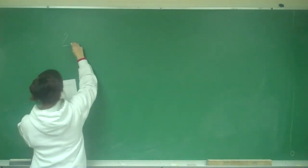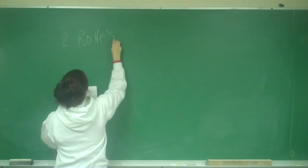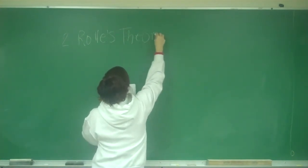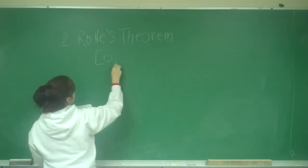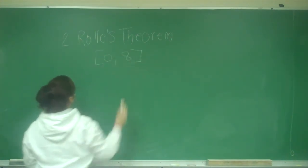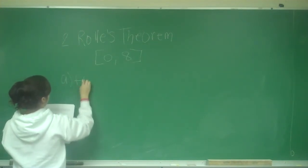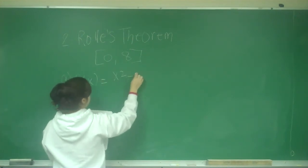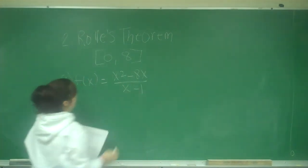So this is number 2, and it is dealing with Rolle's theorem. We're on the interval from 0 to 8. So our first one is A, which is f(x) equals x squared minus 8x over x minus 1.